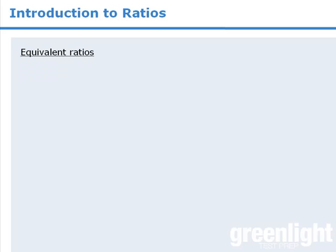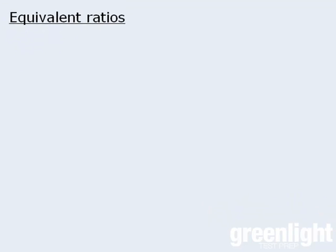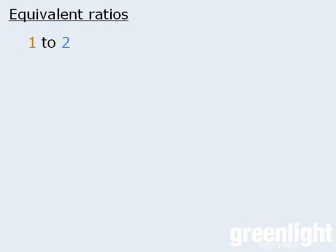Let's look at equivalent ratio questions first. We should recognize that the ratio one to two is equivalent to the ratio three to six. For example, saying there is one girl for every two boys at a school is the same as saying there are three girls for every six boys. Both ratios express the same proportions, so we say that one to two and three to six are equivalent ratios.